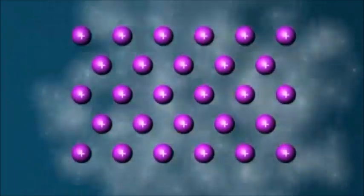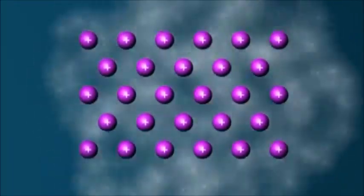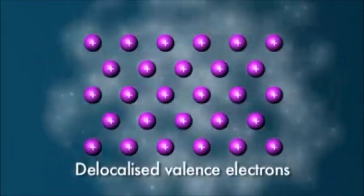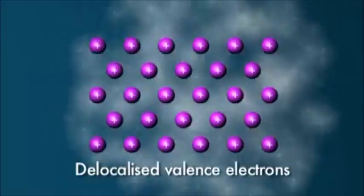Instead, they can move through the lattice in all directions. A sea of delocalized valence electrons surrounds the crystal lattice of the cations.